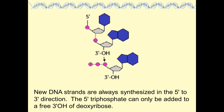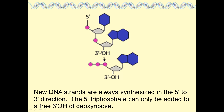Kornberg showed that new strands are always synthesized in the 5' to 3' direction. The 5' triphosphate — carrying three phosphates — is added to the free 3' OH of the deoxyribose sugar. The energy for this reaction is generated by cleaving off the high-energy phosphate bond, releasing two pyrophosphates as a product, and forming the phosphodiester bond.